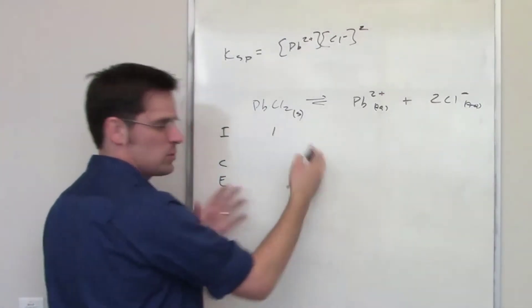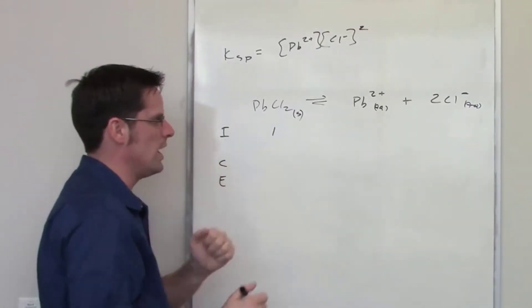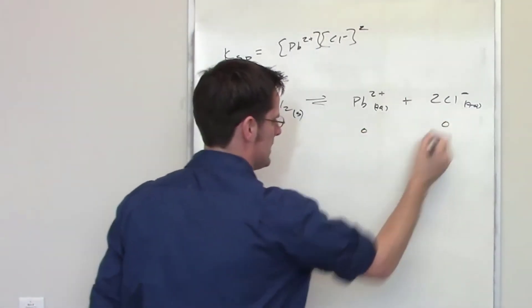It's 100% solid lead chloride. Gradually it will dissociate into this as we reach equilibrium, but right at the initiation it's 100%. So I just write 1 and 0 of these ions.